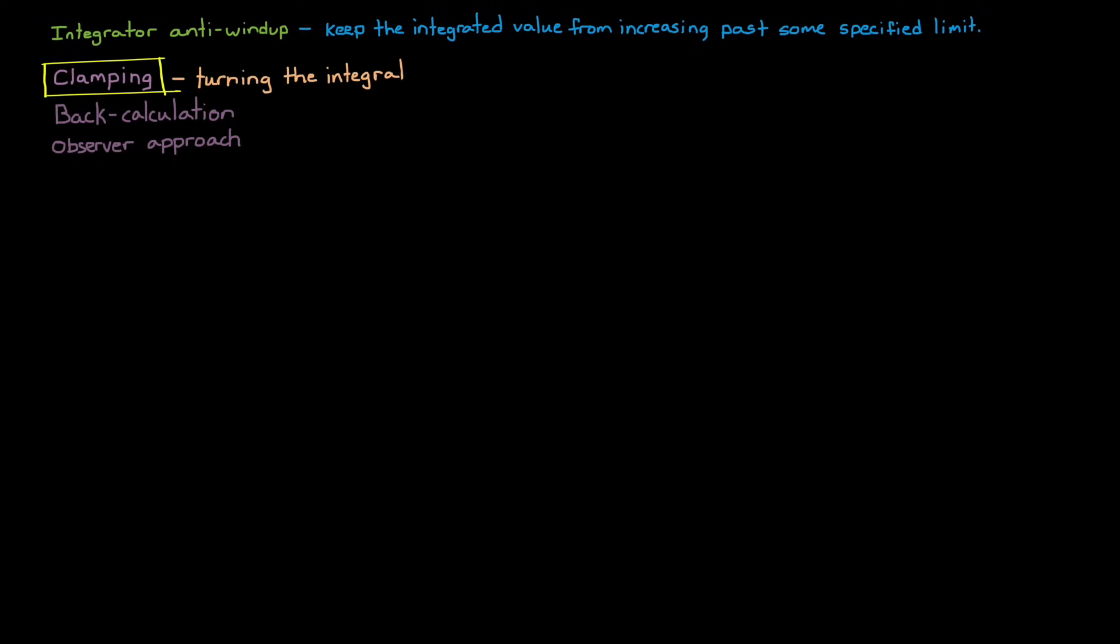There are multiple ways to implement integrator anti-windup, but the idea in each of them is to keep the integrated value from increasing past some specified limit, so that it will immediately respond in the opposite direction when the error changes sign. Clamping can basically be thought of as turning the integrator off whenever you don't want it integrating anymore. And I'm going to talk about this method in more detail because it's popular, and I think it will help you visualize how anti-windup can be accomplished in general.